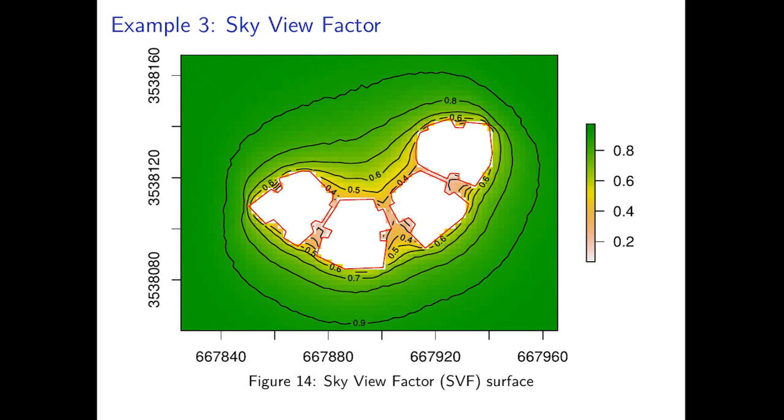The result is visualized here. This is the sky view factor surface for the building surroundings. As can be expected, when we get further away from the building sky view factor approaches the value of one, while near the buildings, for example in the individual point we had earlier, sky view factor is lower, for example 0.44.